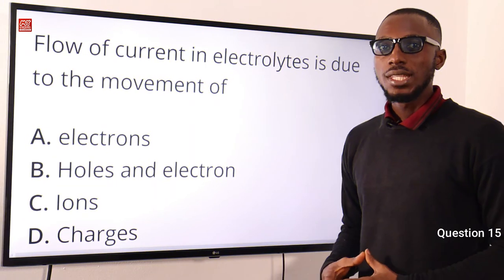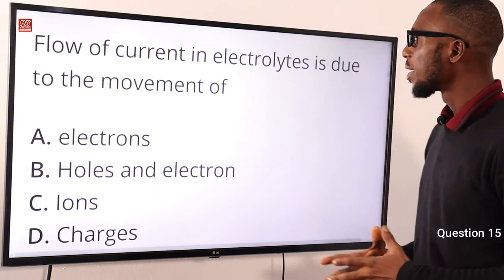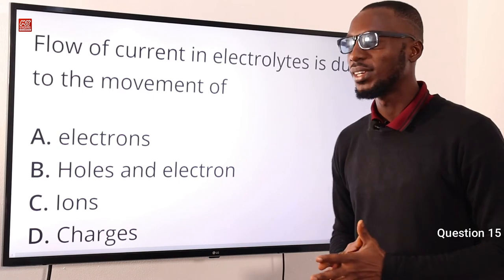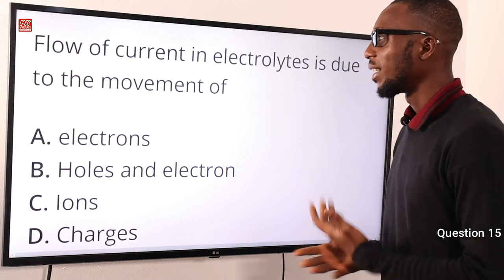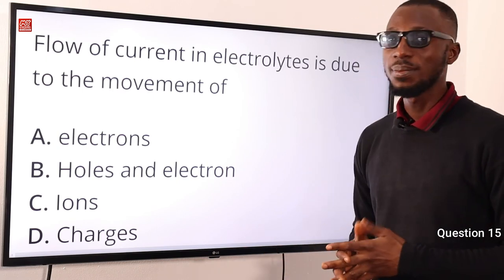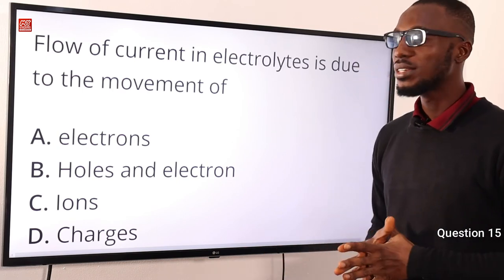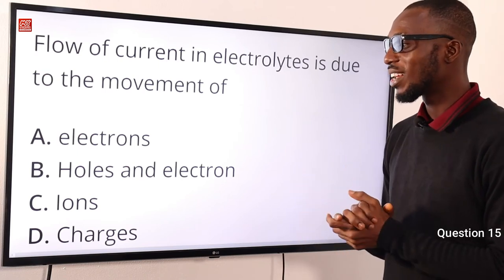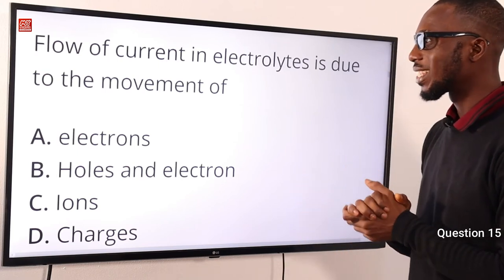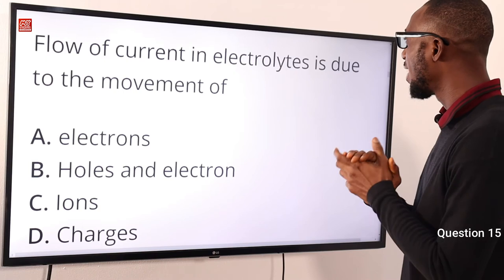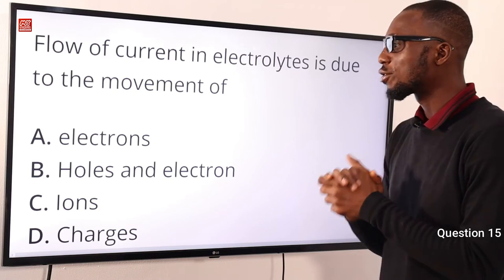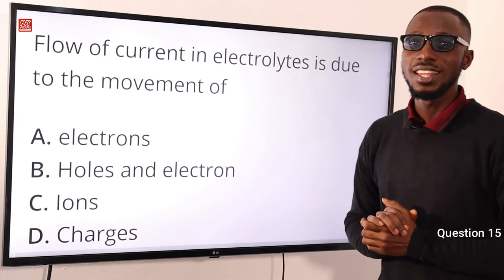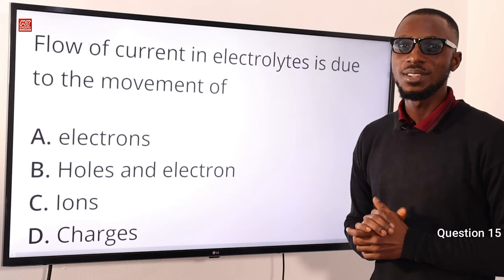Number 15. Flow of current in electrolytes is due to the movement of what? Electrolytes are able to conduct electricity due to the movement of ions. The correct option is option C — flow of current in electrolytes is due to the movement of ions.